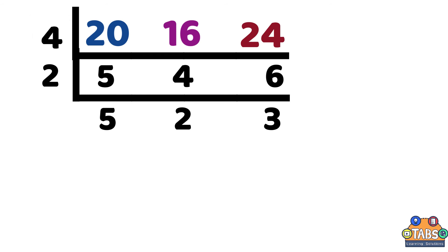Then, we can divide 4 and 6 with 2. After that, bring down 5 as it has no common divisor. So, the numbers below will be 5, 2, and 3.